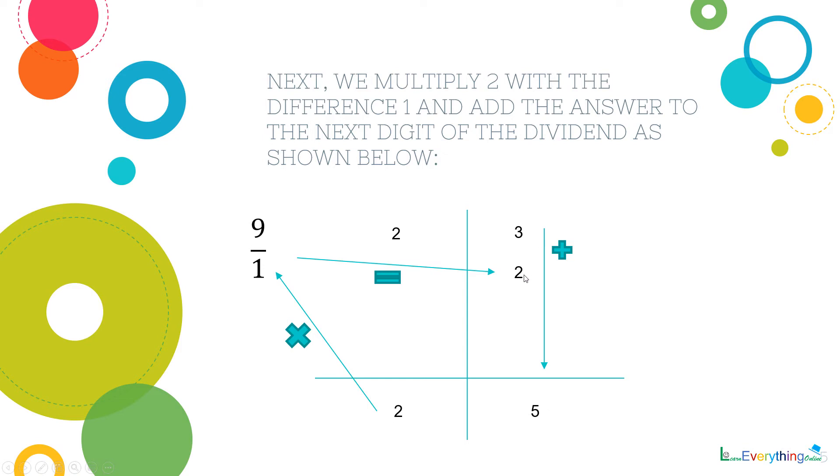3 plus 2 is 5. So we have written 5 here. Now we have got two numbers down which are 2 and 5.